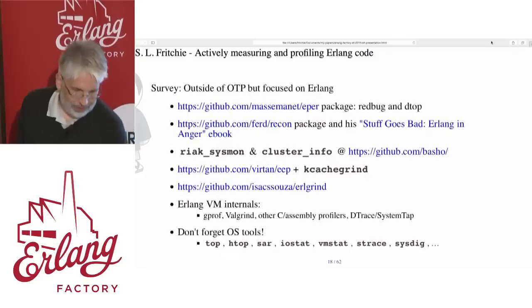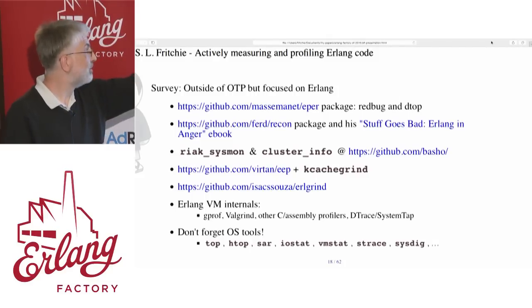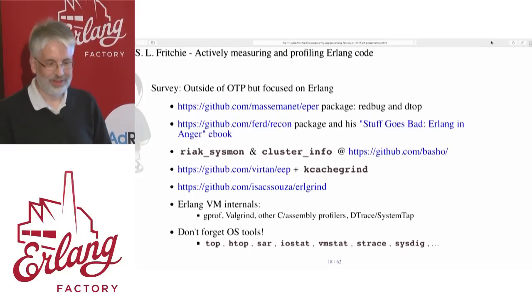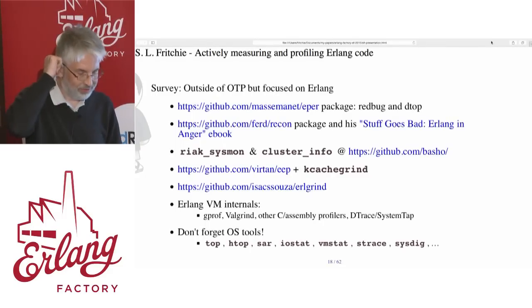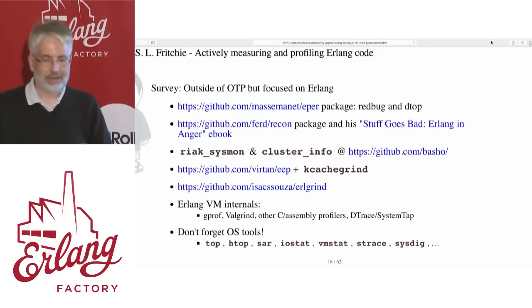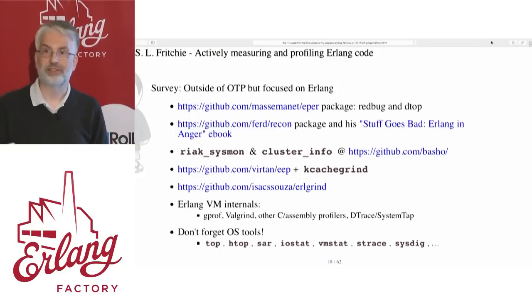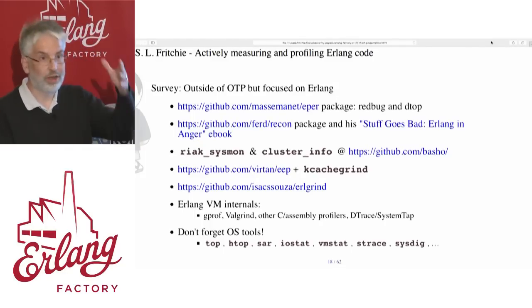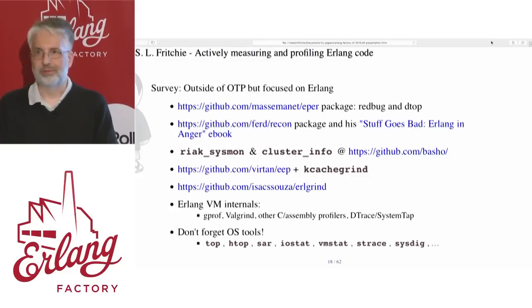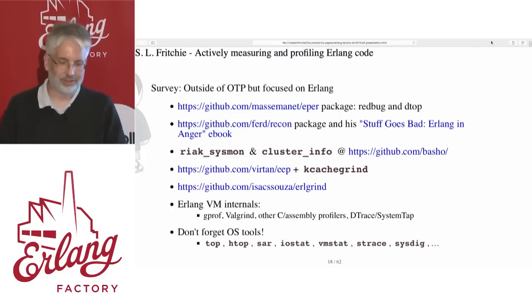There's also the efficiency guide to take a peek at. Outside of Erlang, I'm a big fan of the EPR package, specifically Redbug, Fred Hibbert's package Recon and his electronic book Stuff Goes Bad: Erlang in Anger — highly recommend that too. Someone at lunch, Dimitri, was telling me about EEP, which can take tracing information from Erlang and put it into a format you can feed into the KCacheGrind tool for visualizing stack-aware profiling information. If you want to look at the Erlang virtual machine internals themselves, you can use tools available for C and C++ programs: gprof, Valgrind, DTrace, SystemTap, and so on.